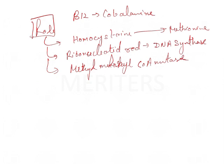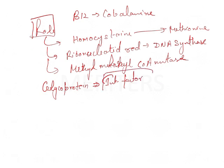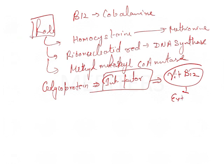Now there is a glycoprotein which is also known as the Castle's intrinsic factor. So there is an intrinsic factor which is biochemically a glycoprotein, and that is important for the absorption of Vitamin B12. That is why we also call Vitamin B12 the extrinsic factor.